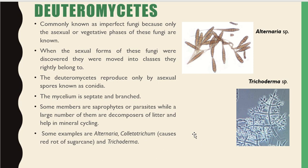Deuteromycetes are called imperfect fungi because only the asexual or vegetative phase is known. When the sexual form was discovered, they were moved into classes where they rightly belong. Deuteromycetes reproduce only by asexual spores called conidia. The mycelium is septate and branched. Some members are saprophytes or parasites, while many are decomposers of litter that help in mineral cycling. Examples include Alternaria, Colletotrichum, and Trichoderma.